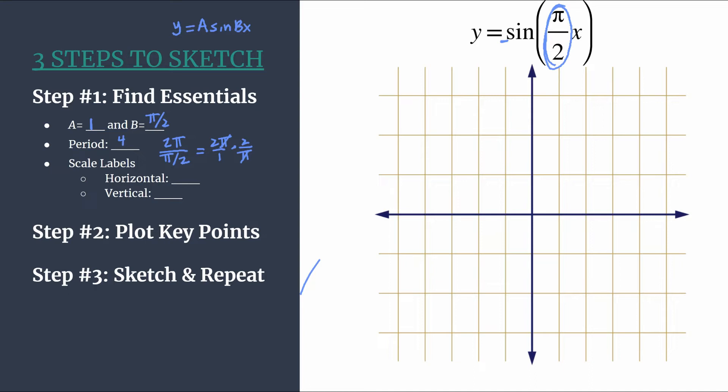We know with our method we like to choose our horizontal scale labels so that they make our graph as clean and neat and concise as possible. So all we need to do to find what we'll label our horizontal tick marks with is take the period and divide by four. And this makes sure our key points will align with these horizontal tick marks. So luckily enough, four divided by four is one.